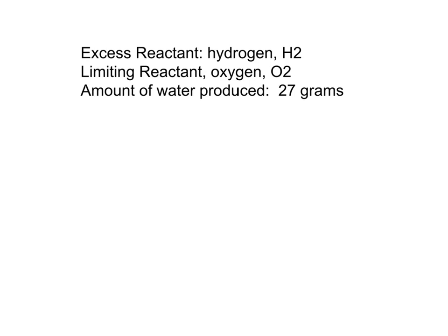To summarize this problem: the excess reactant is hydrogen — not every bit of the hydrogen was used, and there was hydrogen left over at the end of the reaction. The limiting reactant was oxygen — every bit of the oxygen was used; it was the reactant which ran out first. The amount of water produced in the reaction was 27 grams.